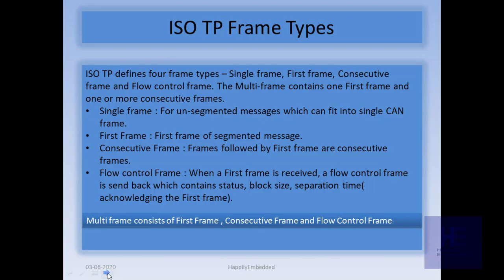The first byte is used to add metadata called PCI — Protocol Control Information. Regarding PCI, I will explain in the next slide. The First Frame is the first frame of a multi-frame sequence. The Consecutive Frame follows the First Frame. The Flow Control Frame acknowledges the First Frame of a Multiframe. So the First Frame, Consecutive Frame, and Flow Control Frame are all part of CAN Multiframe.